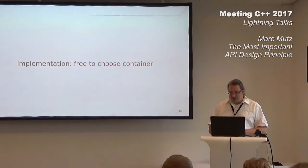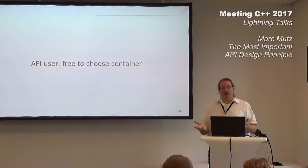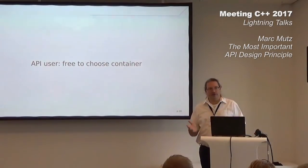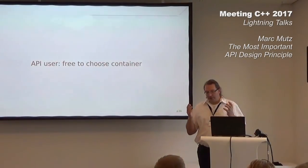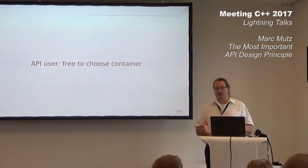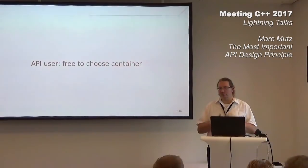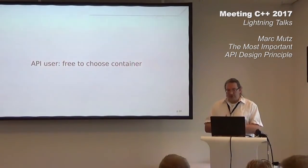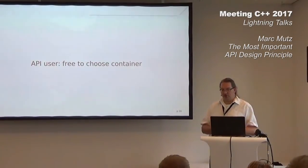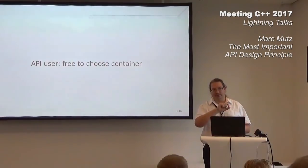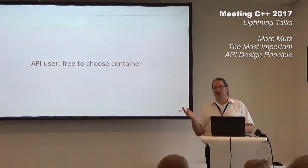On the other hand, the API user is also free to choose their container. They can continue to use the Qt containers, change to C arrays, or use std::vector. Of course, there are associative containers — we don't have views for them yet, and maybe we never will. But as I said, it's an idea for an API design principle, and I want to plant this seed in your heads. Maybe next year we'll come back and talk about where it's gotten us.